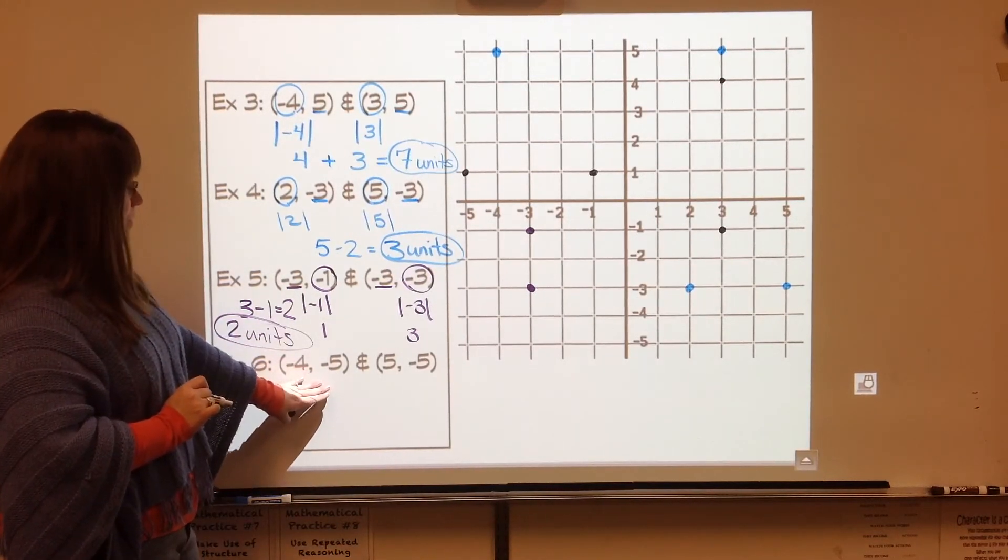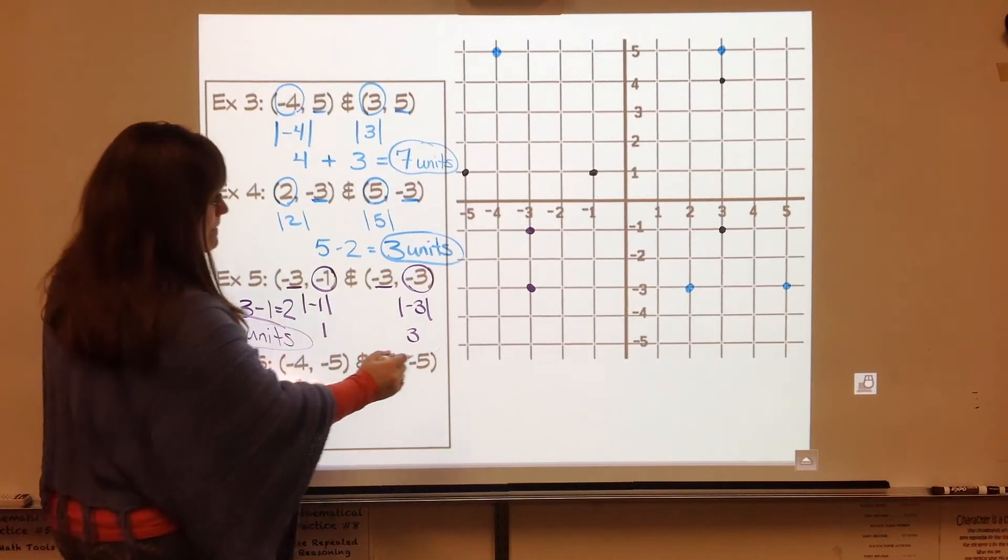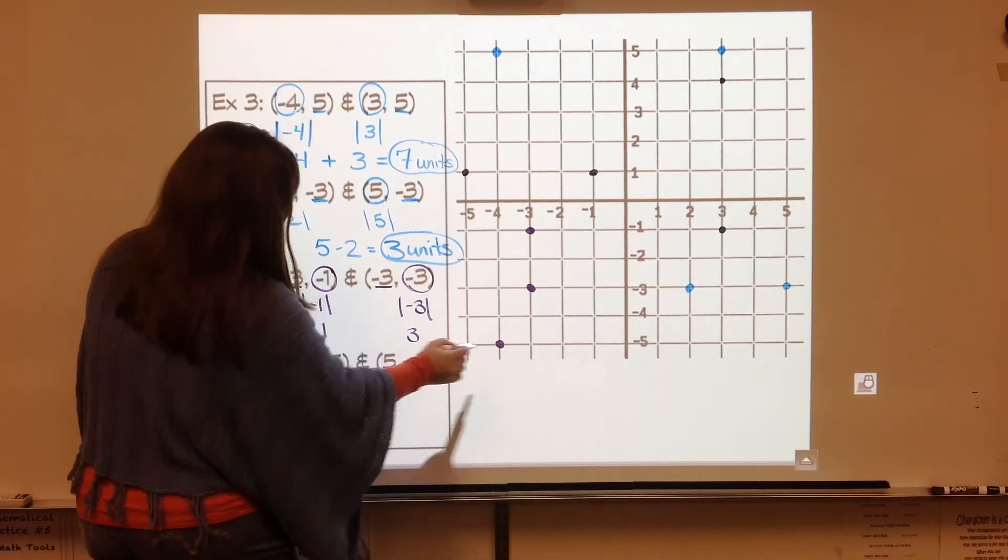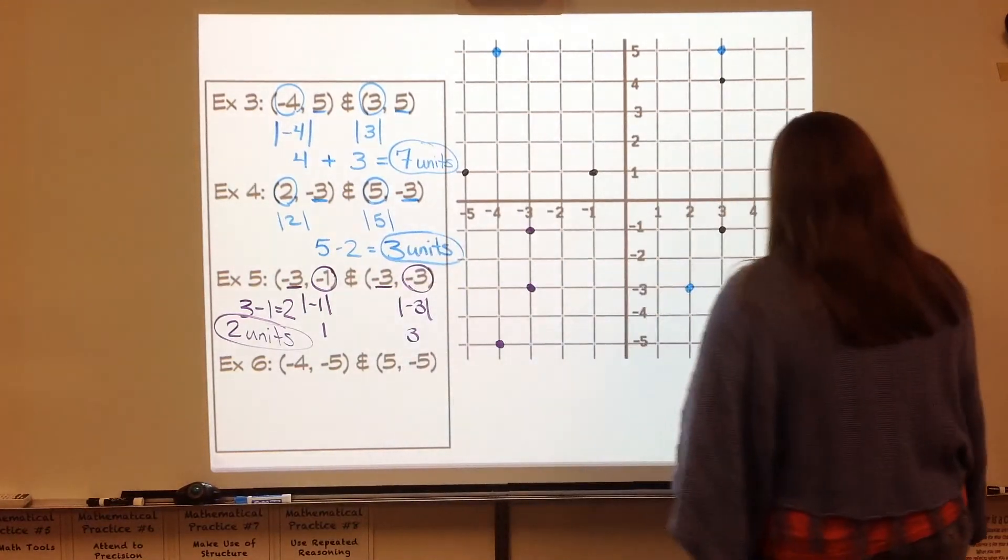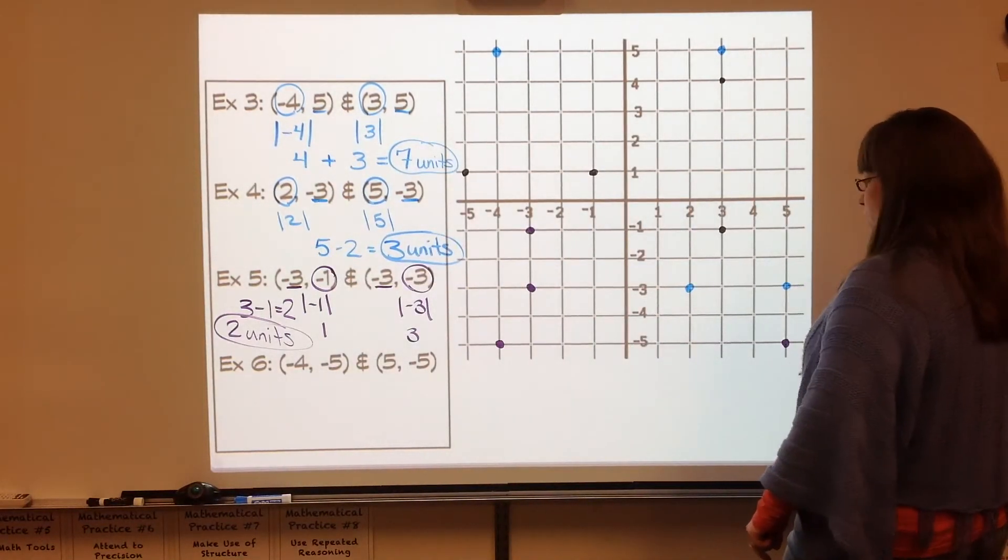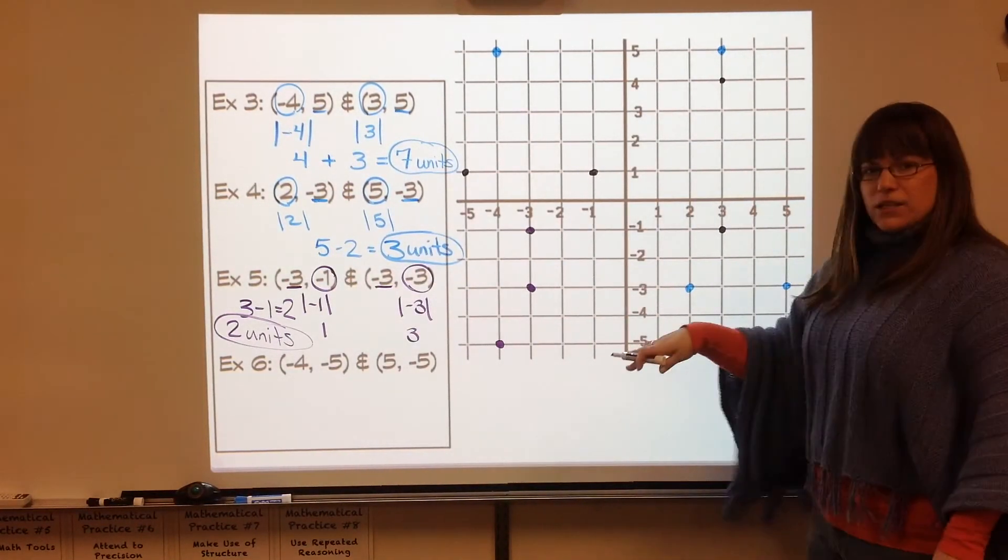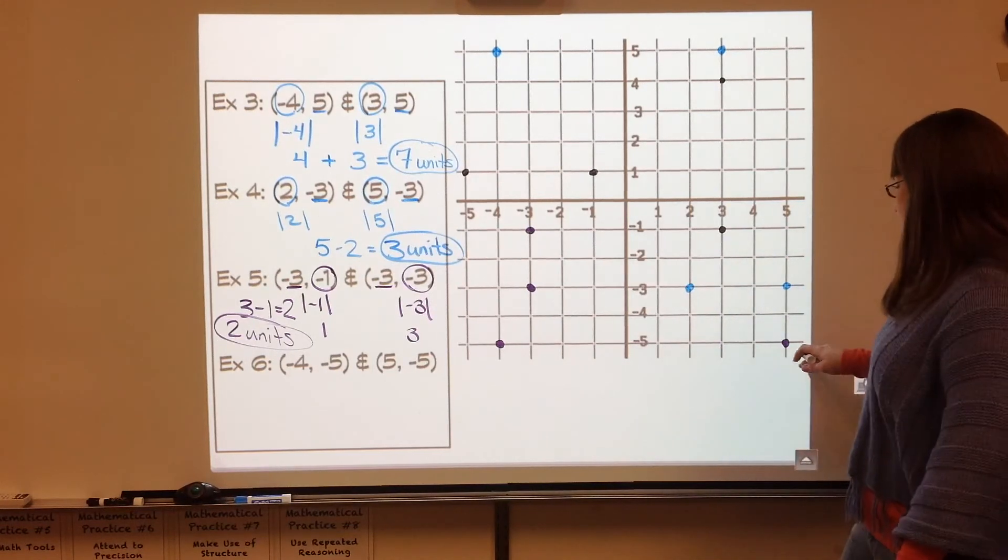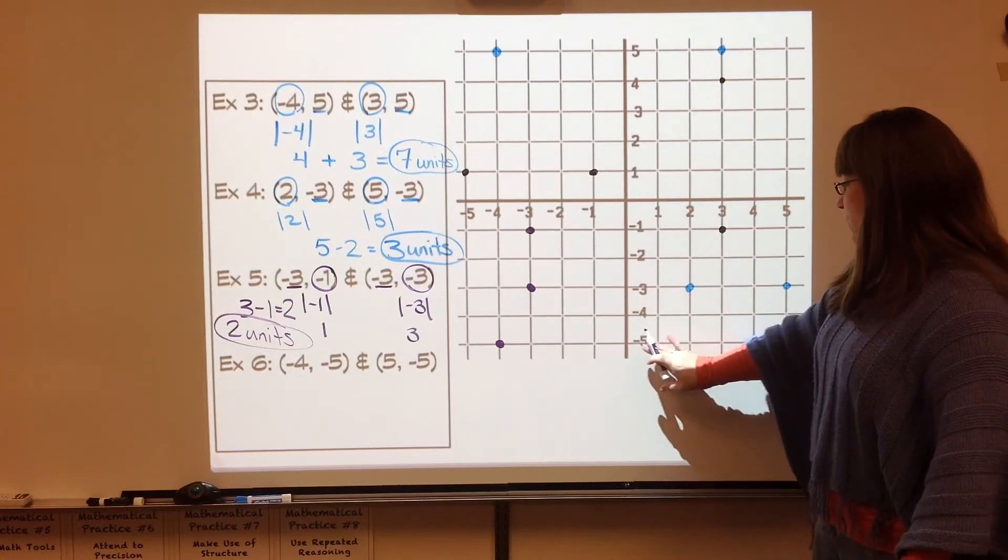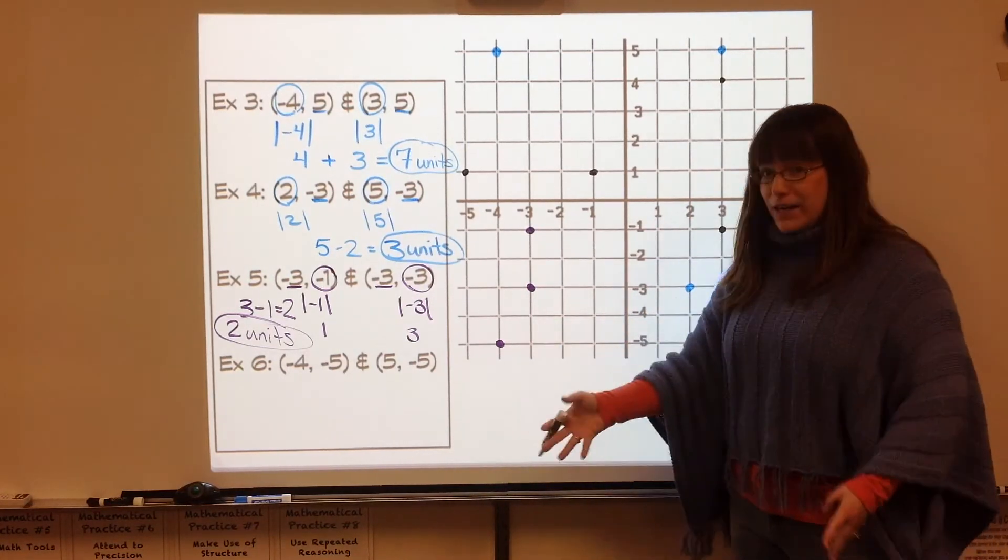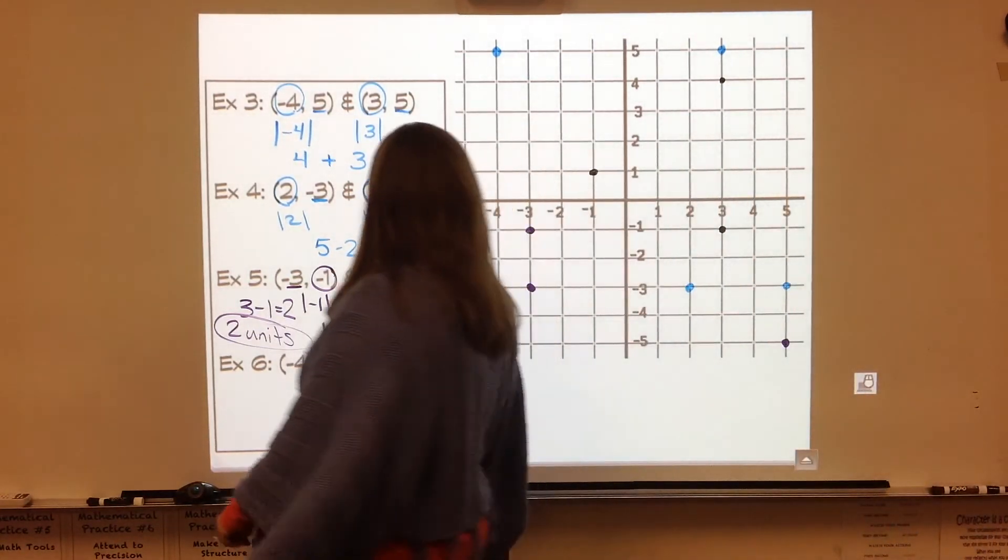Example six has negative four comma negative five, which is right here. And then we have five comma negative five, which is all the way over here. So this is an example of, whoa, you might count wrong. But I'm seeing one, two, three, four, five, six, seven, eight, nine.